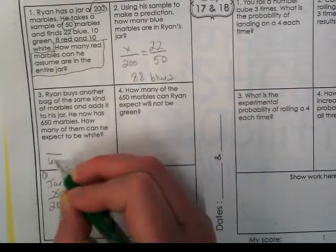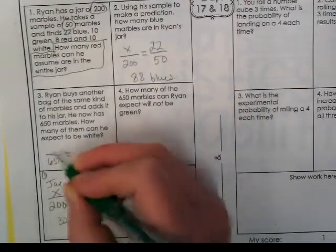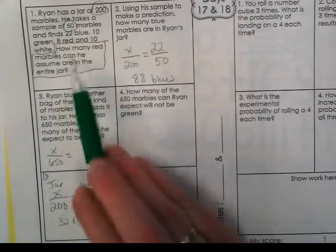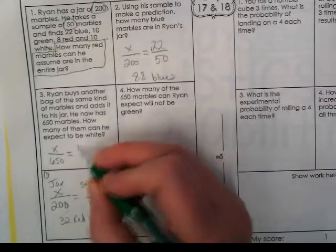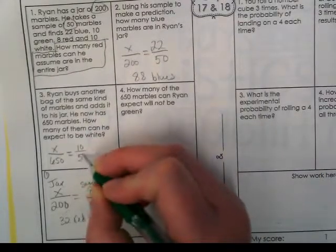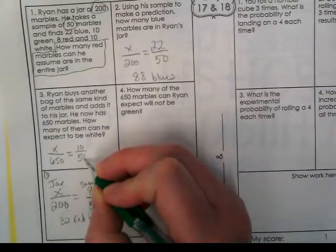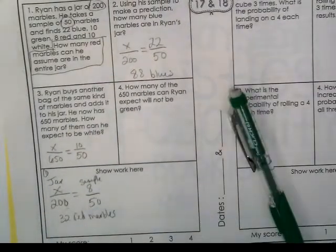Well, his new jar is 650. We're looking this time for white. And he had in his original sample 10 whites. 10 out of how many? Well, it was 10 out of his sample of 50. Okay, now I can't do this one in my head. I've got 1 times 650.